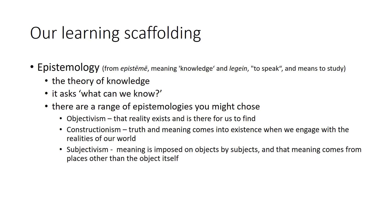The third epistemology is subjectivism. In subjectivism, meaning is imposed on objects by subjects — that meaning comes from places other than the interaction of the individual with the object. It's not the object that gives meaning to itself; other things brought to the object by the subject bring meaning to it.